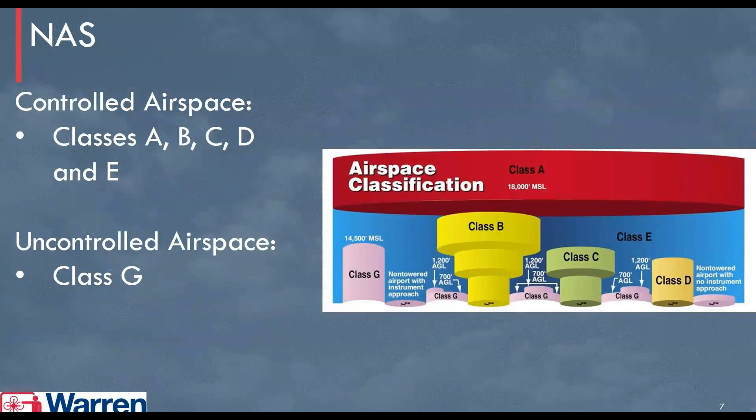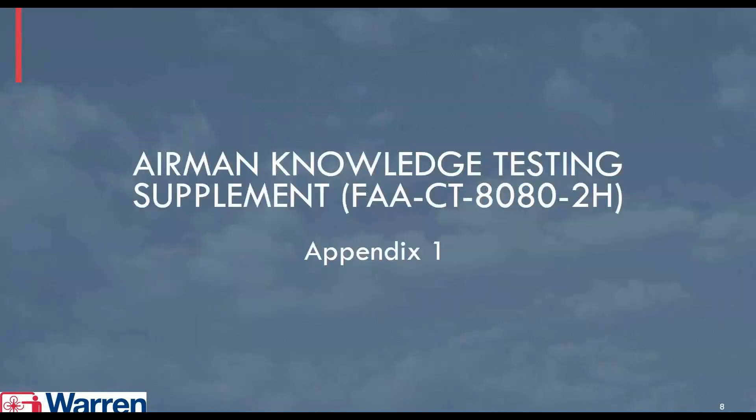The airspaces controlled by air traffic control are Classes A, B, C, D, and E. The only airspace that is uncontrolled and relies on visual flight rules for the most part is Class G airspace. This is where you will spend the vast majority of your time as a drone operator.